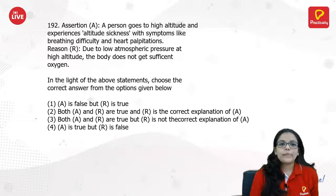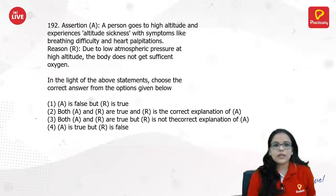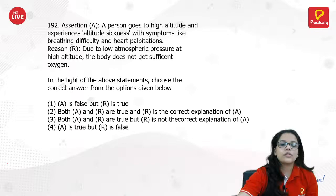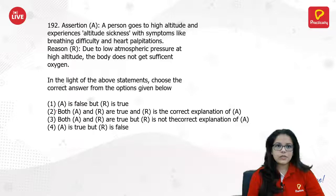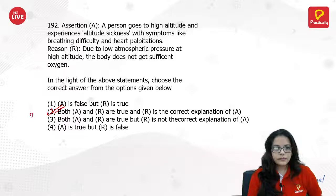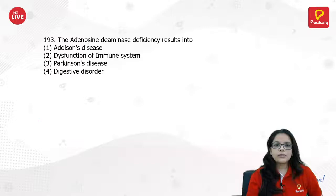A person goes to high altitude and experiences altitude sickness with symptoms like breathing difficulty and heart palpitations. The reason is due to low atmospheric pressure at high altitude — the body does not get sufficient oxygen. Both A and R are true. ADA deficiency results in dysfunction of the immune system, and this is corrected by gene therapy.